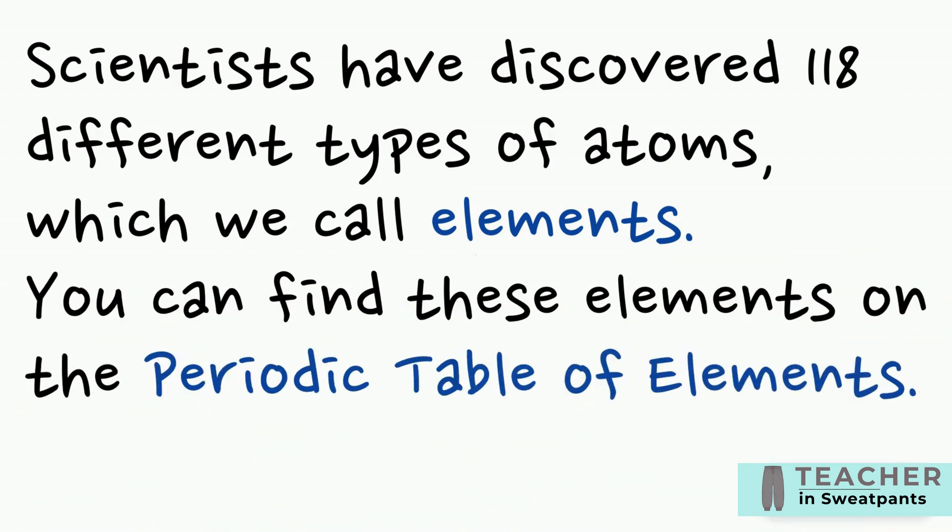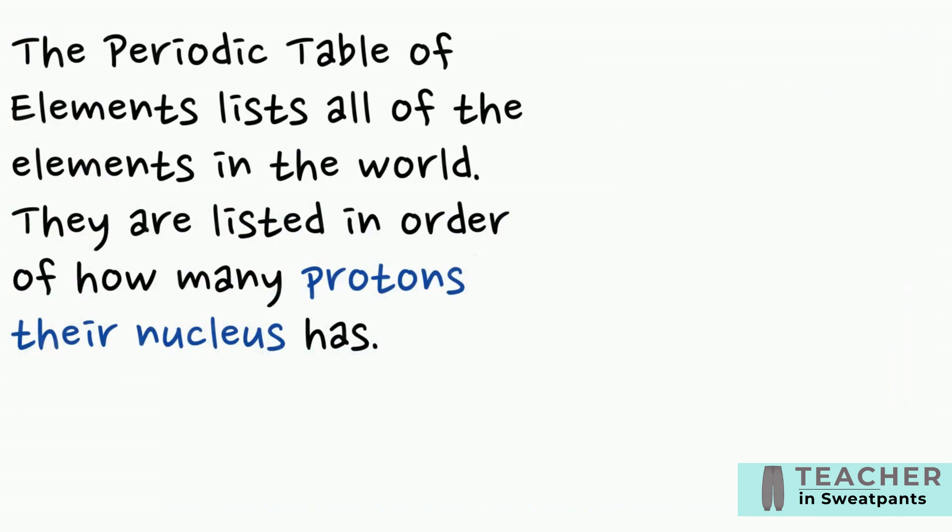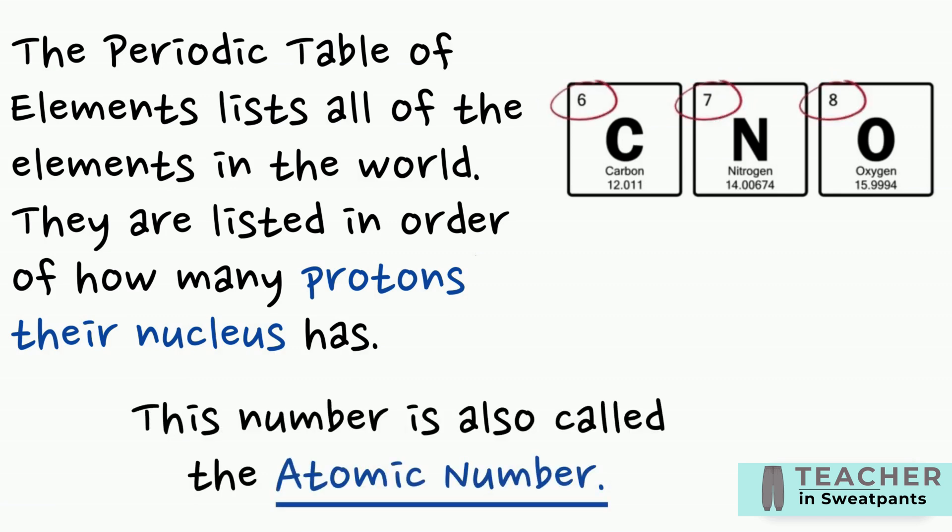You can find these elements on the periodic table of elements. The periodic table of elements lists all of the elements in the world. They are listed in order of how many protons their nucleus has. This number is also called the atomic number.